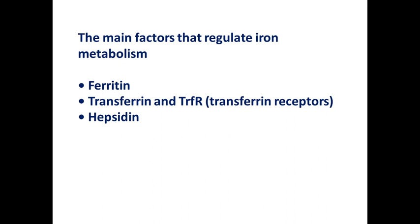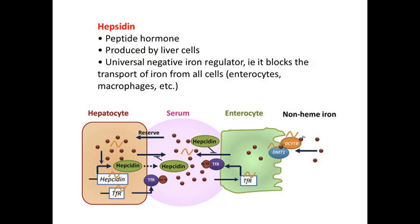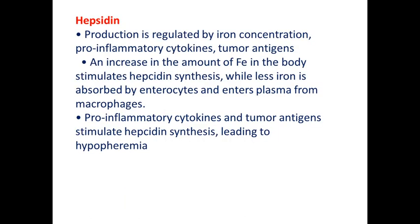The main factors that regulate iron metabolism are ferritin, transferrin, transferrin receptors, and hepcidin. Hepcidin is a hormone produced by liver cells and is a universal negative iron regulator — it blocks the transport of iron from all cells including enterocytes and macrophages. Hepcidin production is regulated by iron concentration, pro-inflammatory cytokines, and tumor antigens. An increase in the amount of iron in the body stimulates hepcidin synthesis.